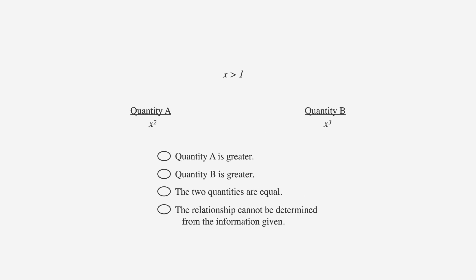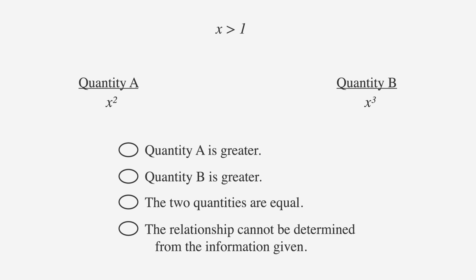So let's look at quantity A and quantity B. The answer choices are the same in all QCs. In the first step of the method, using the centered information, we have a number greater than 1, that number squared in column A, and a number greater than 1 cubed in column B.